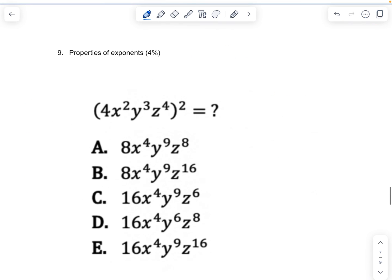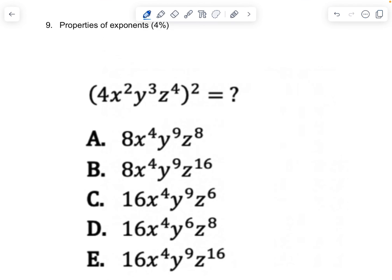Properties of exponents, 4% of the test. So how do we do a problem like this? Remember that if you have, for example, a to the b and all of that is raised to the c, then the answer is going to be a to the b times c. So that's the case where you have an exponent raised to an exponent like we do here. We have exponents raised to an exponent via the parentheses. So what we're going to do is just treat this like individual problems. We have the 4, x squared, y to the 3rd, z to the 4th.